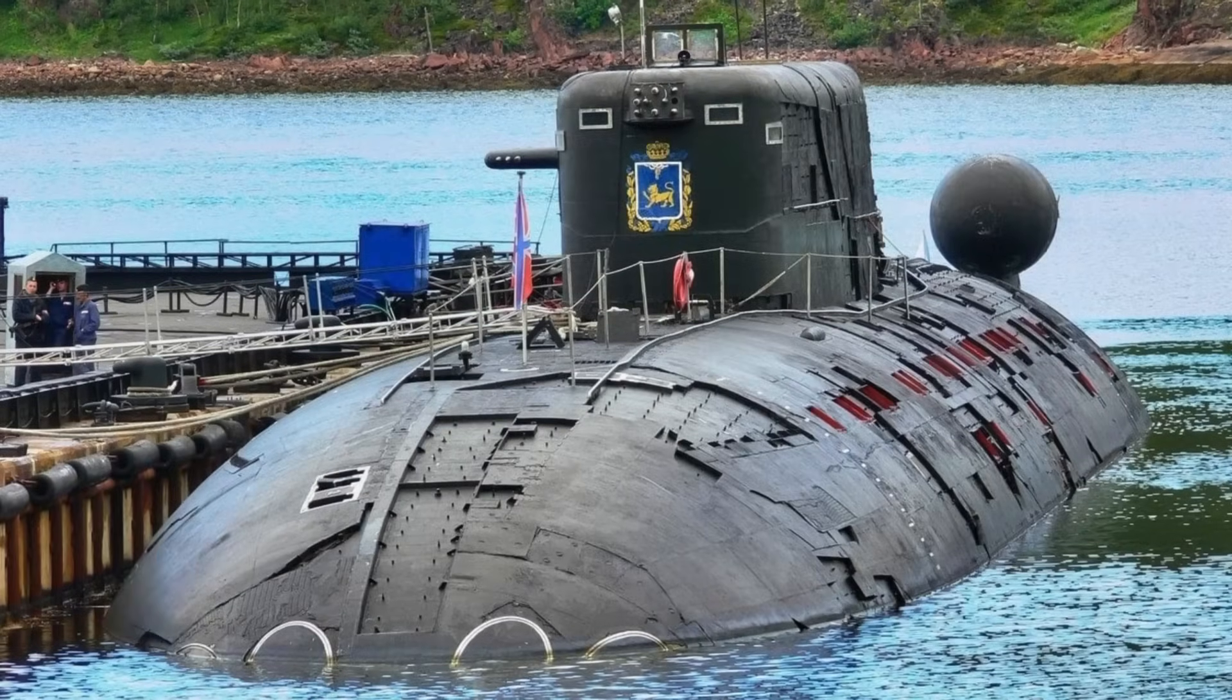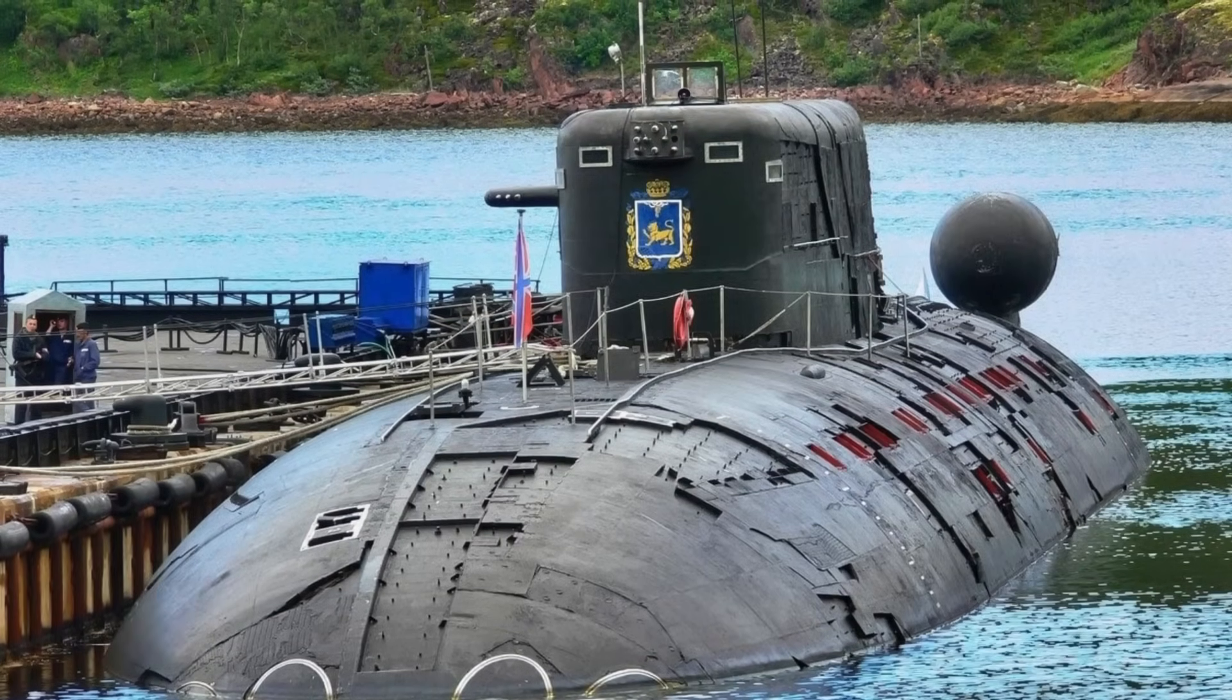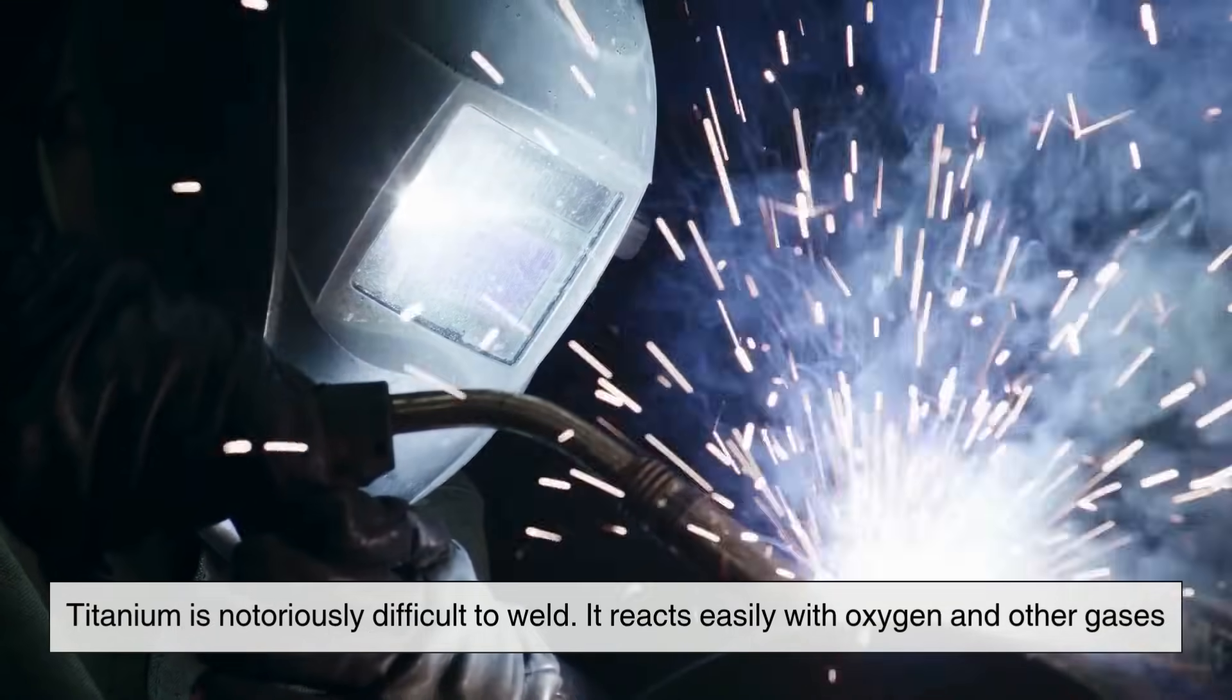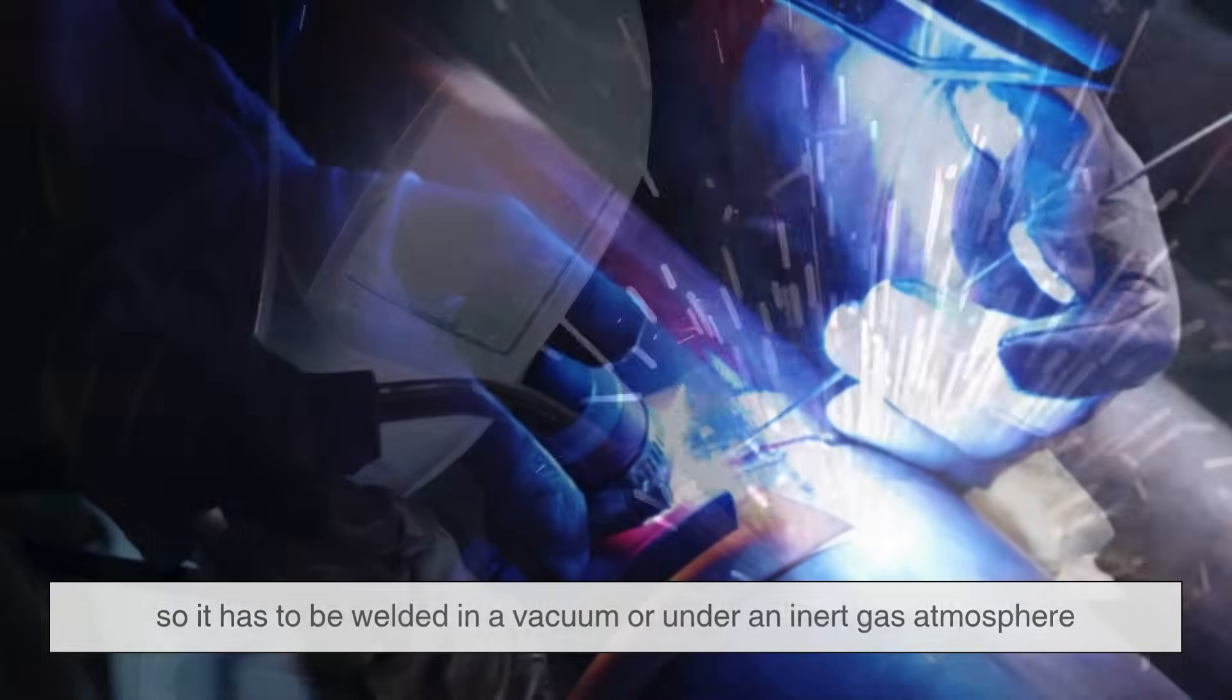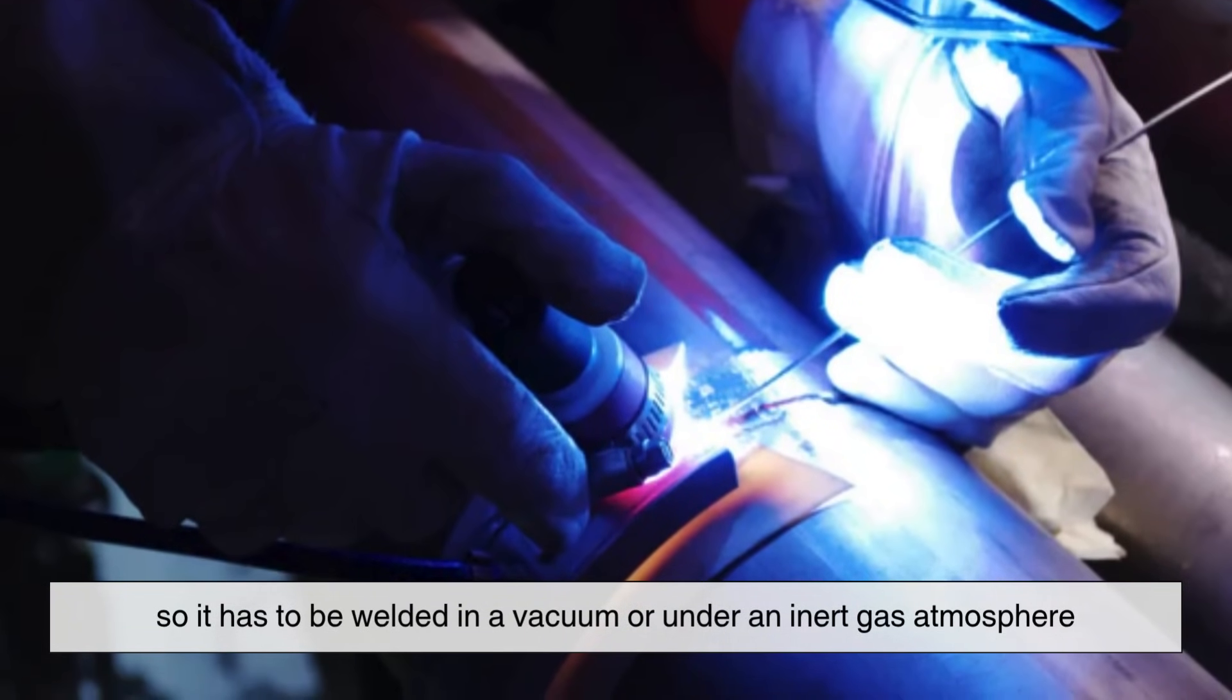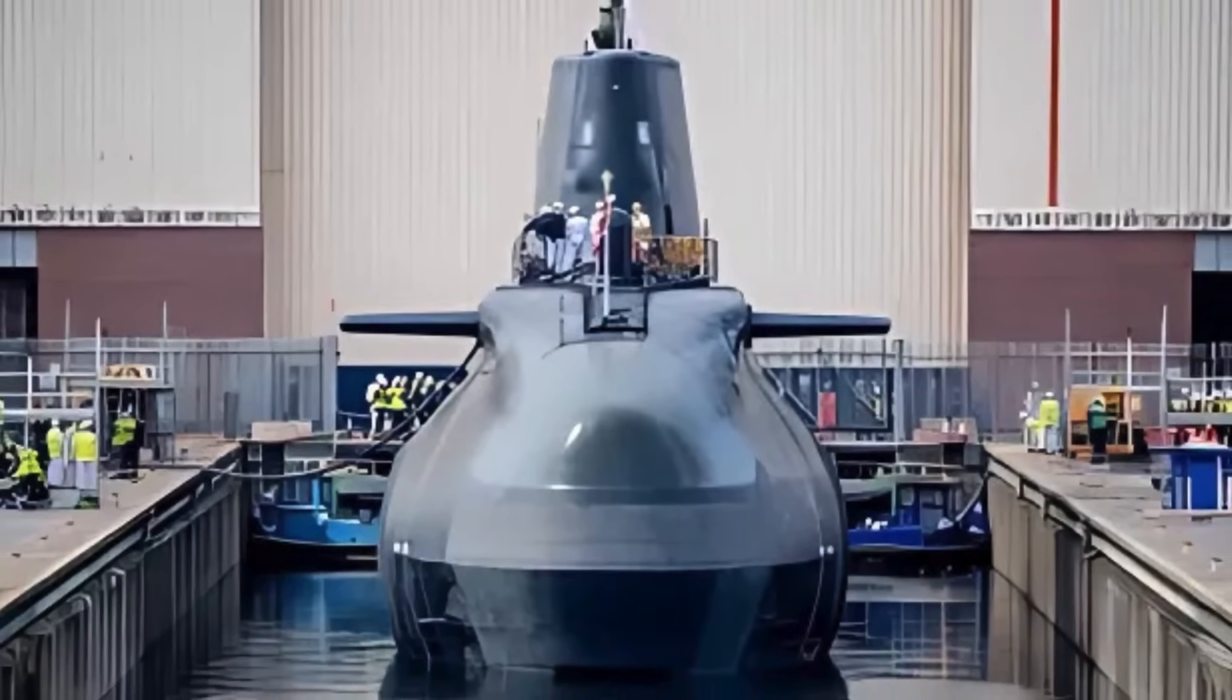Of course, building a submarine out of titanium wasn't cheap or easy. Titanium is notoriously difficult to weld. It reacts easily with oxygen and other gases, so it has to be welded in a vacuum or under an inert gas atmosphere. That makes construction slow, expensive, and technically demanding.